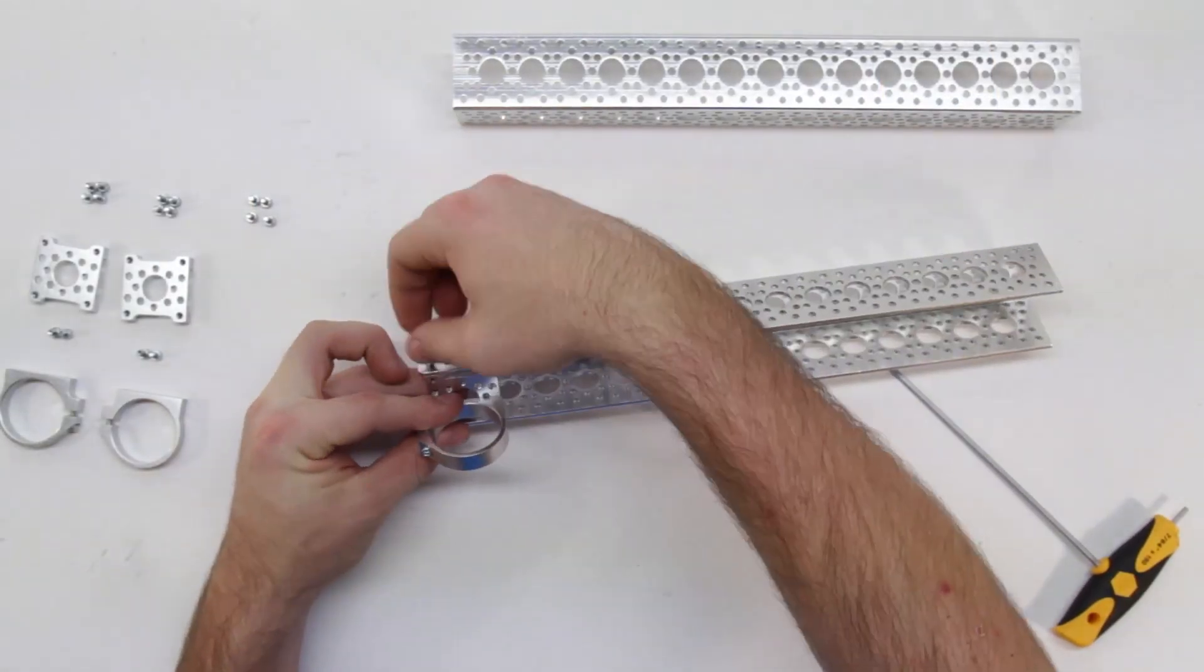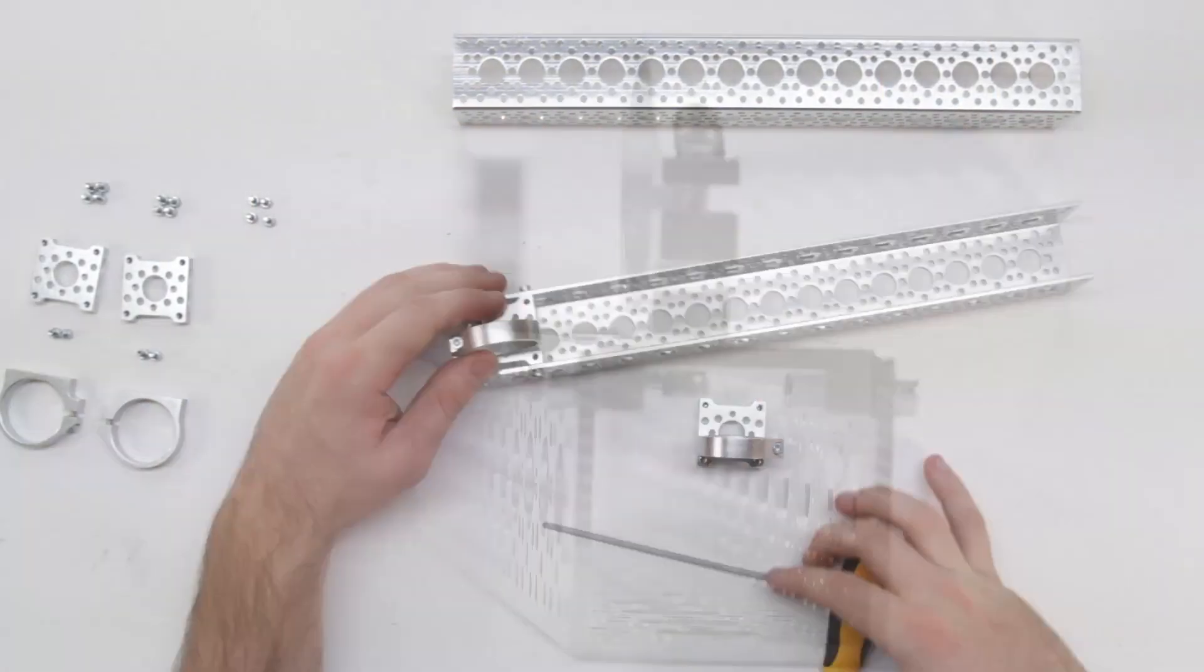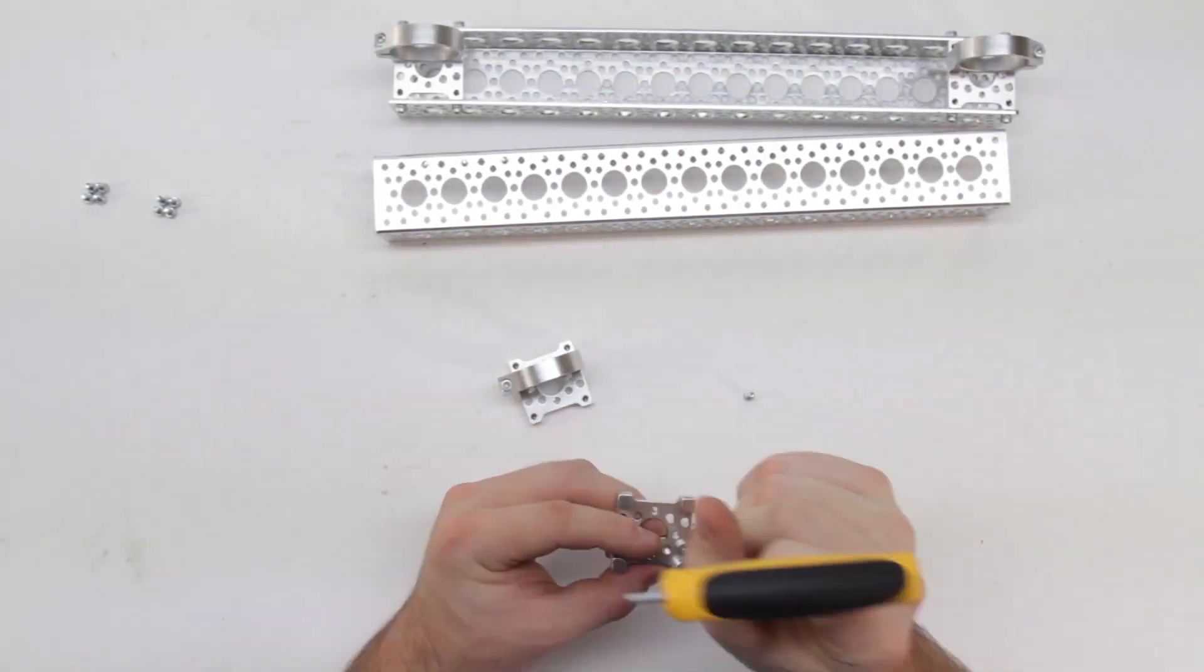Fasten the mounts to the end pieces of the channel so that the screws in the motor mounts face away from the channel. Repeat this step for both lengths of channel.